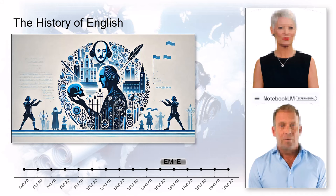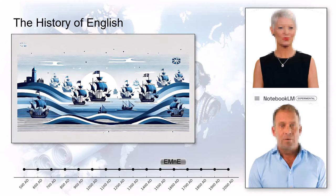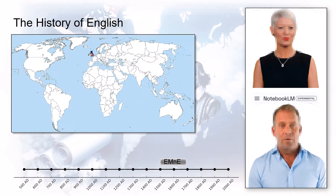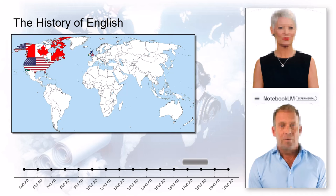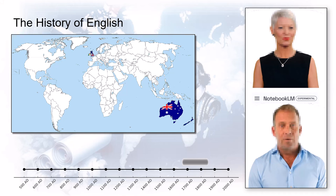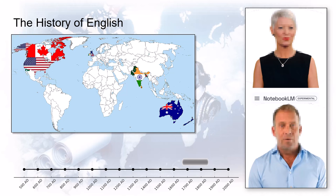But before we jump too far ahead, we need to address colonization happening in the background. English wasn't just an island language anymore — it hitched a ride on ships, spreading across the globe with the British Empire. When languages collide, it's a two-way street. Think about American English, Australian English, even how English is spoken in India — all telling their own stories, shaped by interactions with native languages and immigrants.